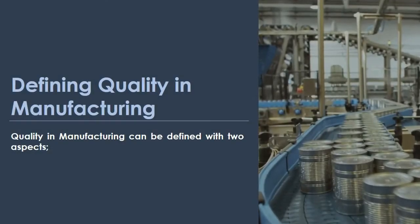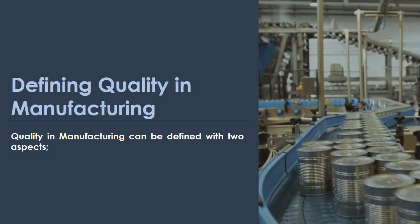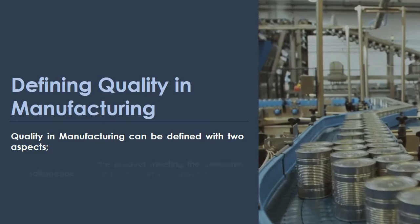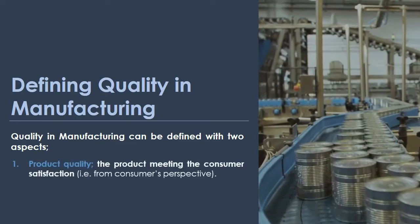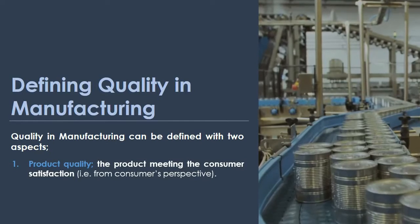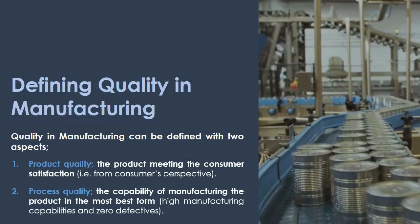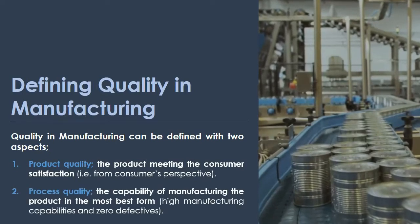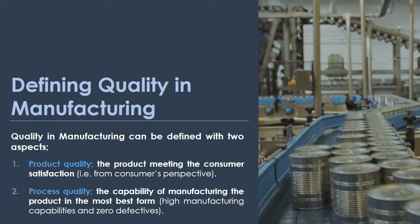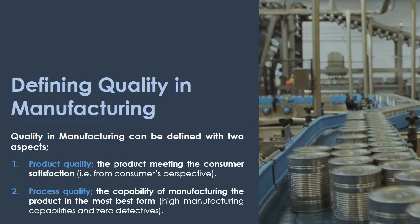Quality in manufacturing can be defined with two aspects. The first one is product quality, which means the product meeting consumer satisfaction. The second one is process quality, which means the capability of manufacturing the product in the best form.